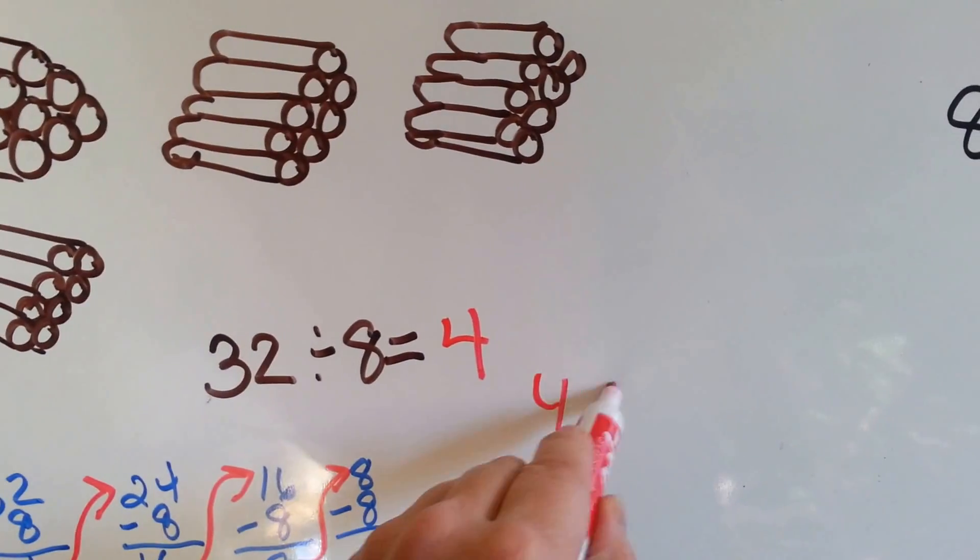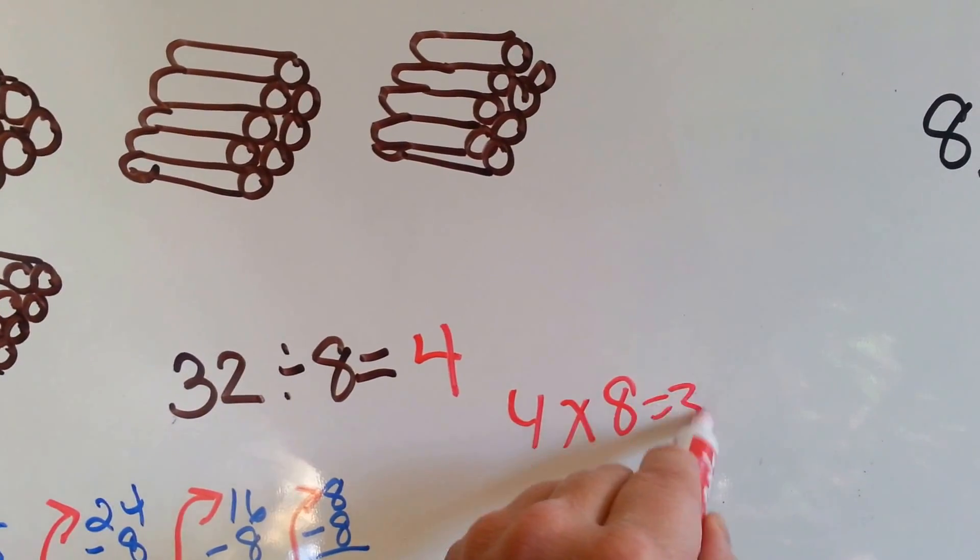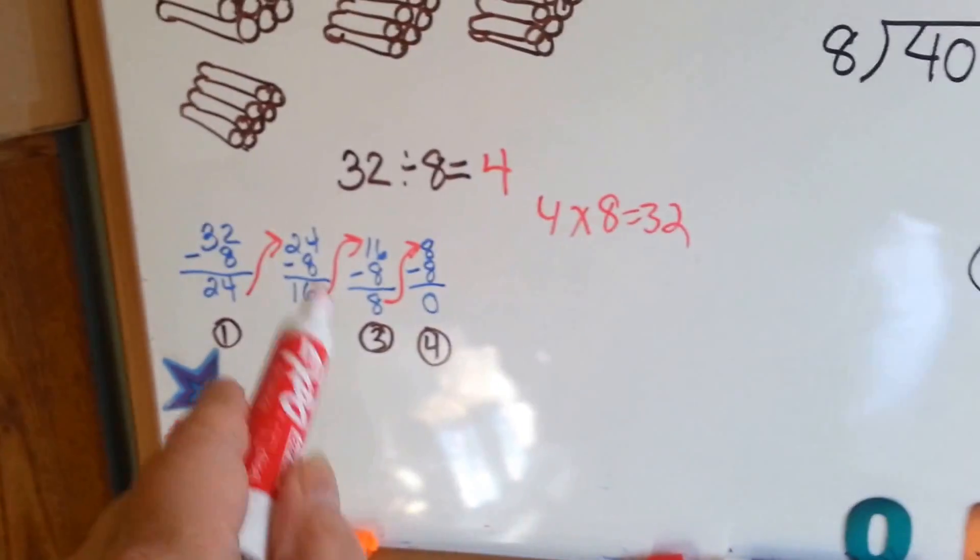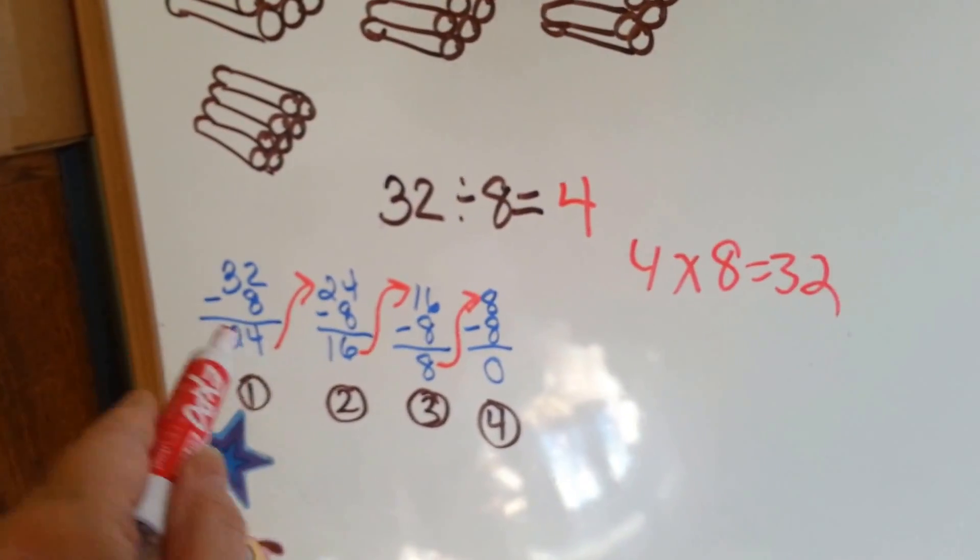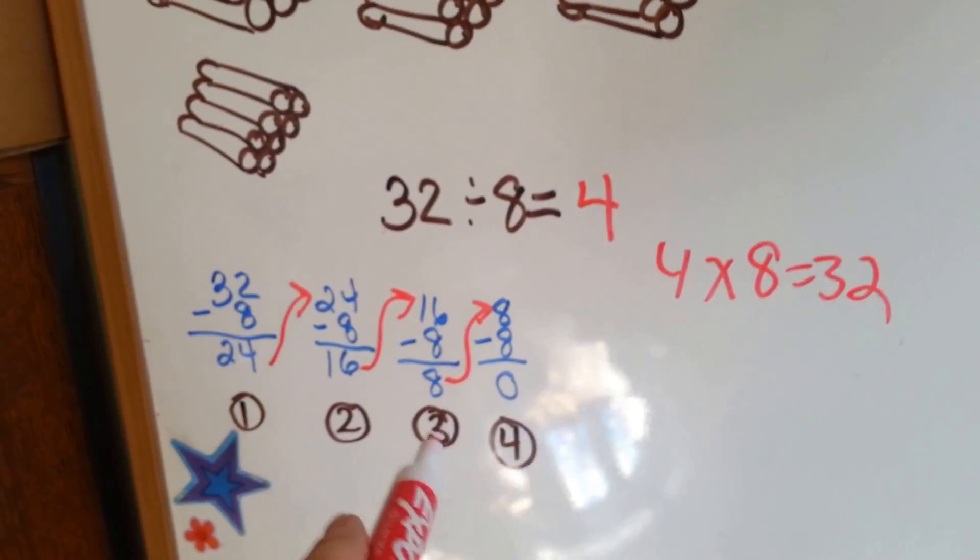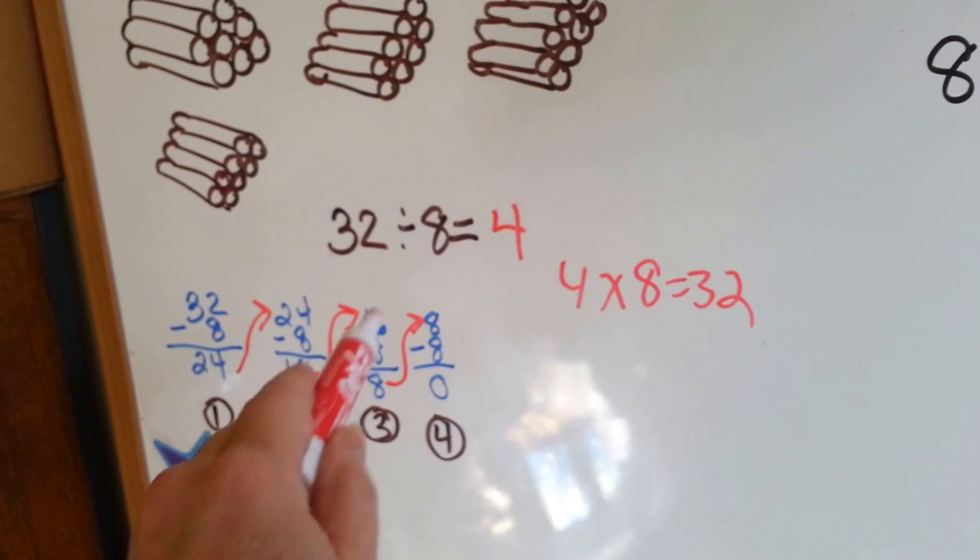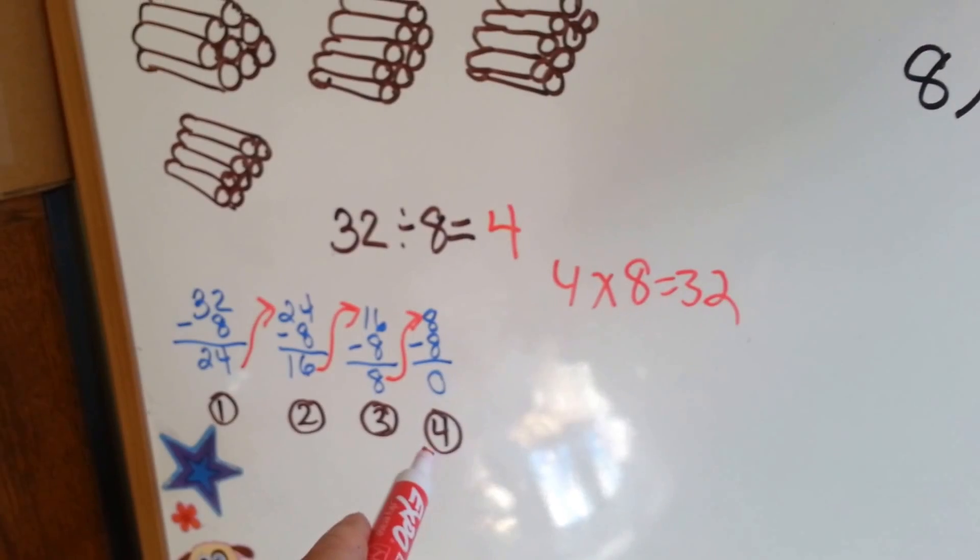And look, 4 times 8 equals 32. That's the inverse, the opposite. So that's the subtraction method for figuring out a division answer. You just keep subtracting that number from the answer over and over again, and then you count how many times you subtracted.